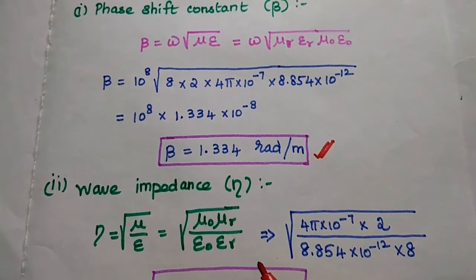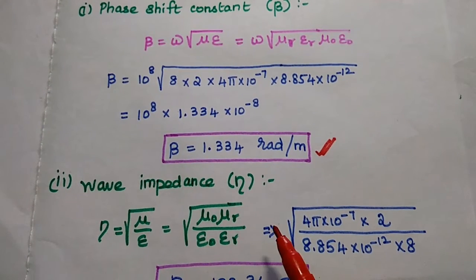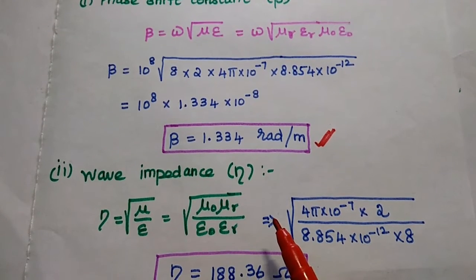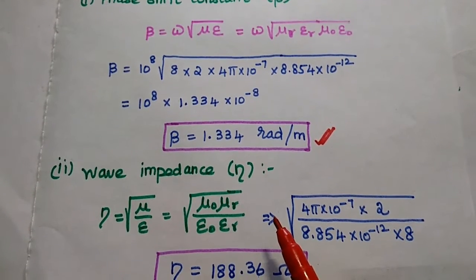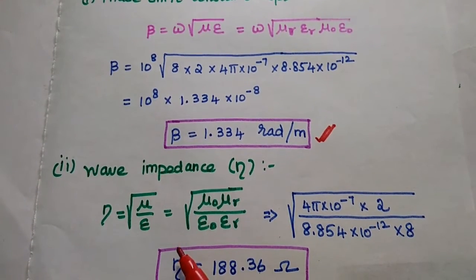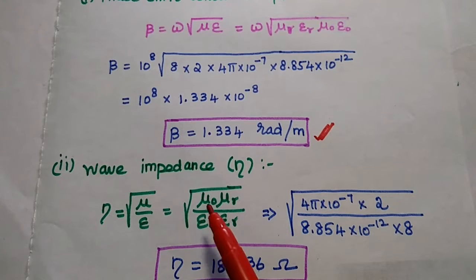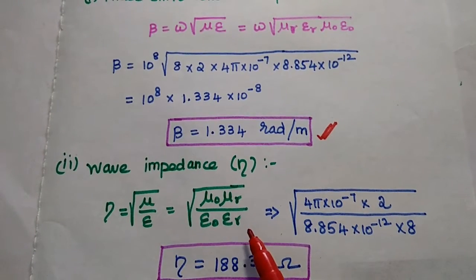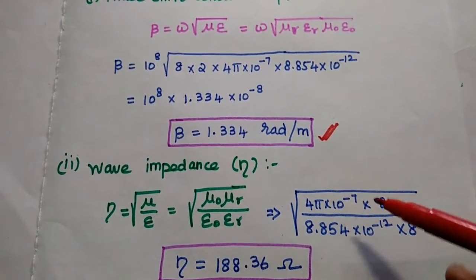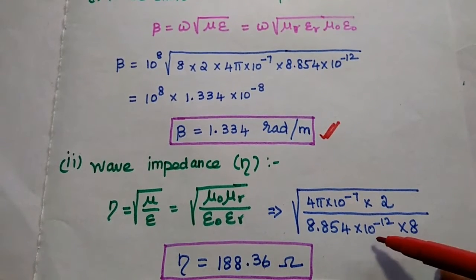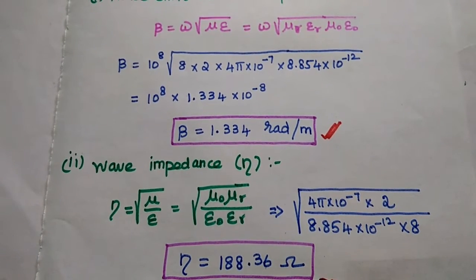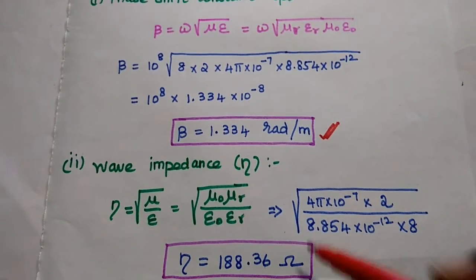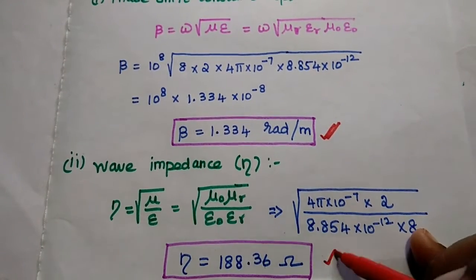Next is the characteristic impedance, also called wave impedance. Using eta = √(μ/ε) = √(μ_naught μ_r / ε_naught ε_r), we substitute all values to obtain eta equals 188.36 ohms.